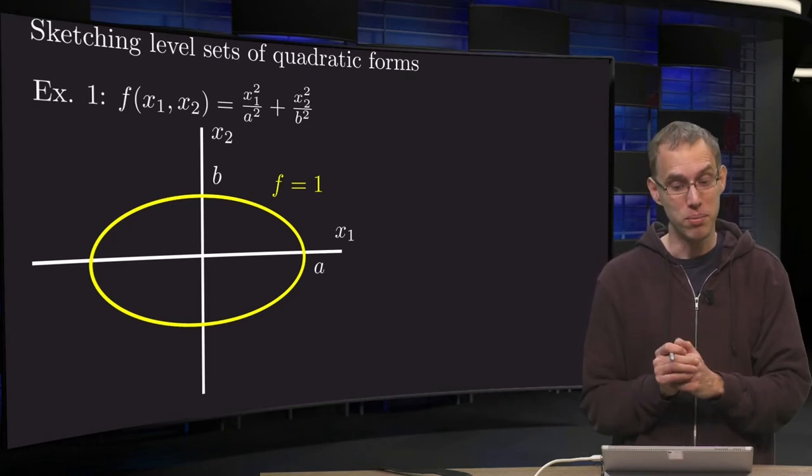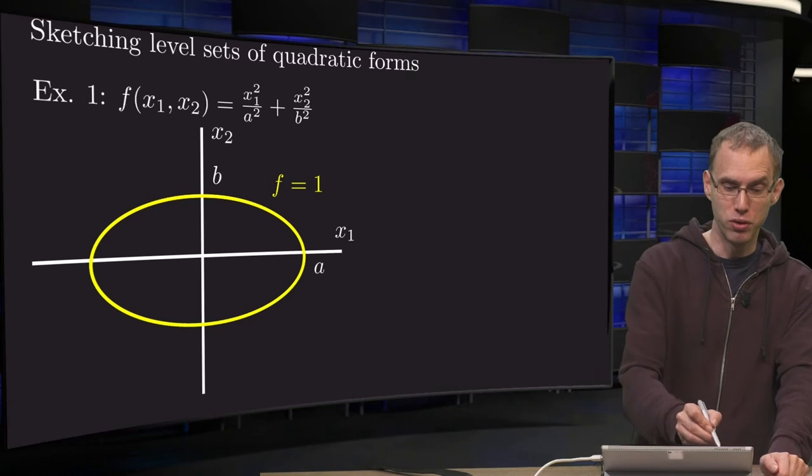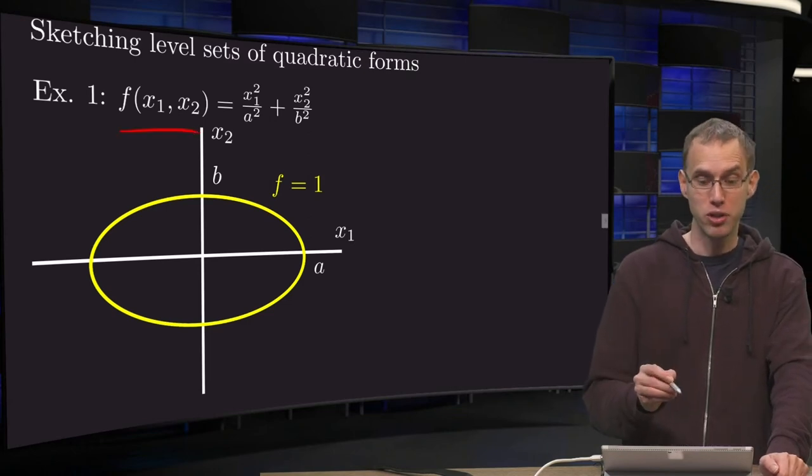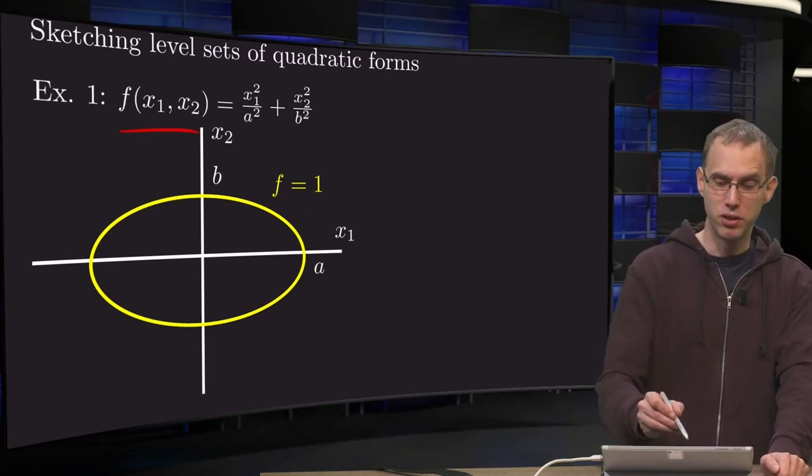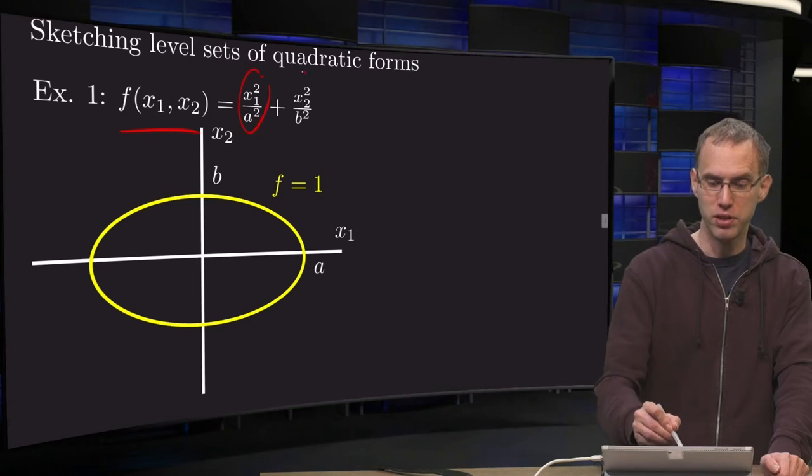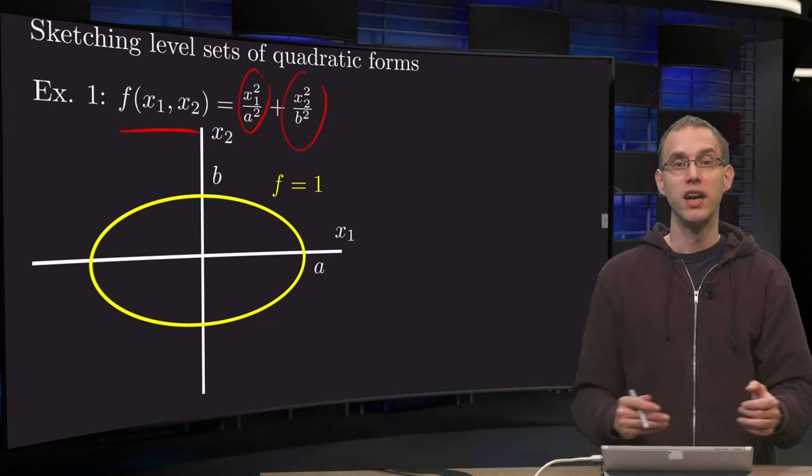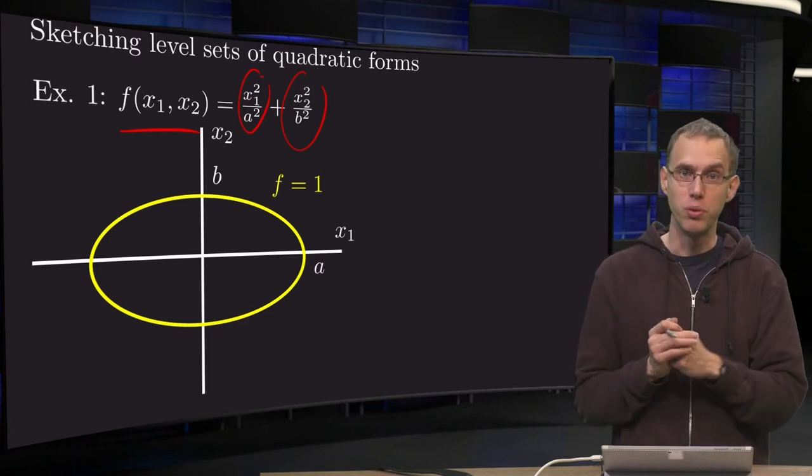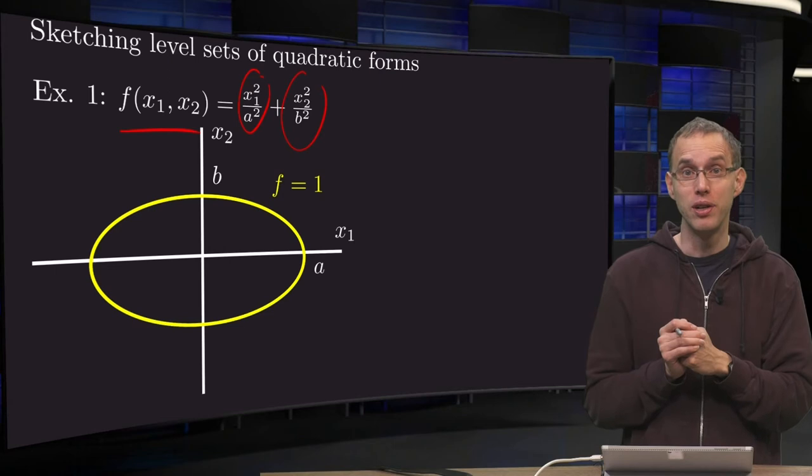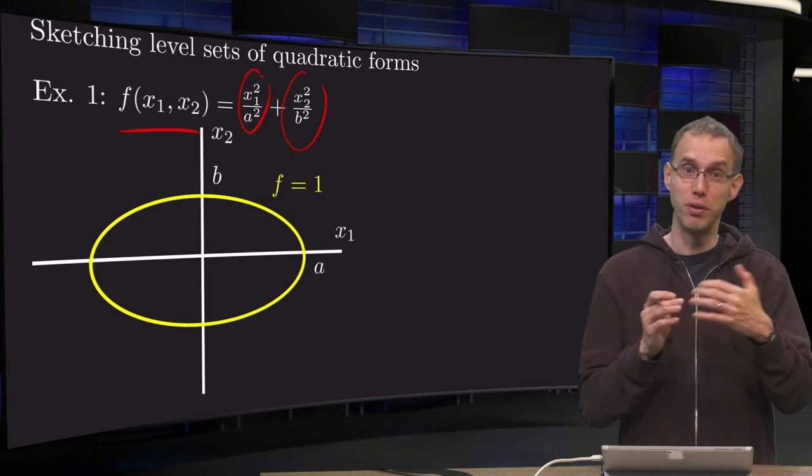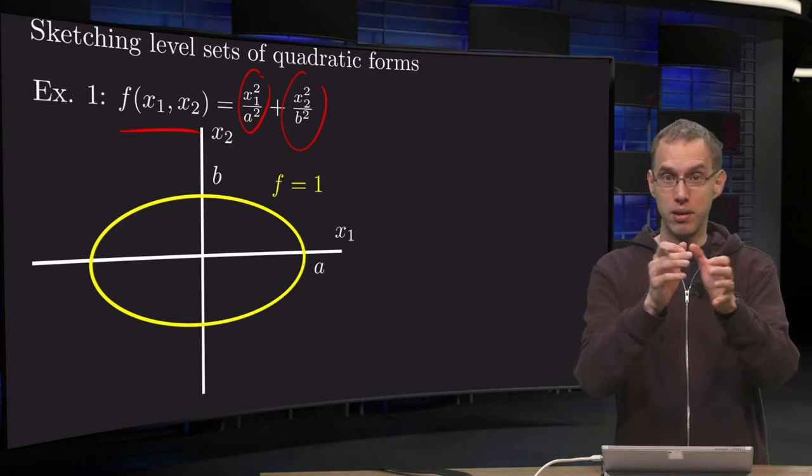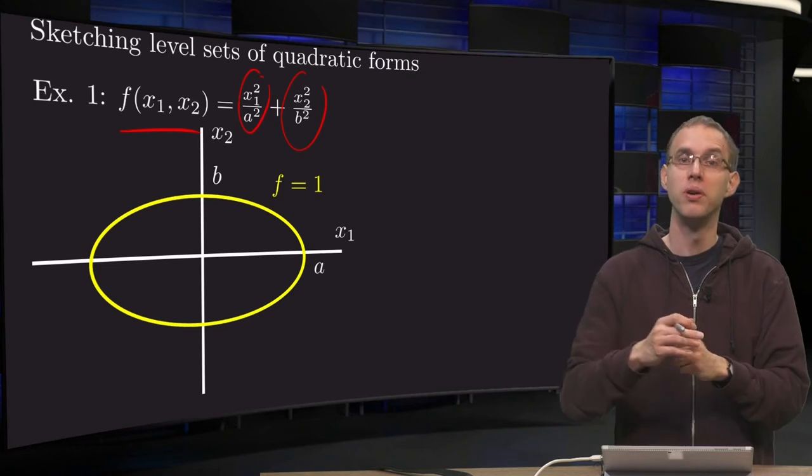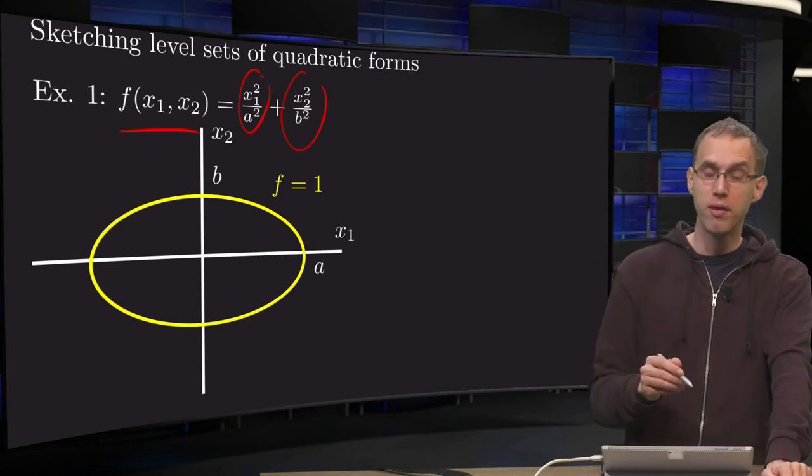So let's take a look at a few examples. A function of two variables and no mixed terms. So we set for example x1 squared over a squared plus x2 squared over b squared. In other words, we put two positive constants. So what do we get as our level sets? Well, hopefully you will recognize this. These will become ellipses increasing in size if you make the constant bigger.